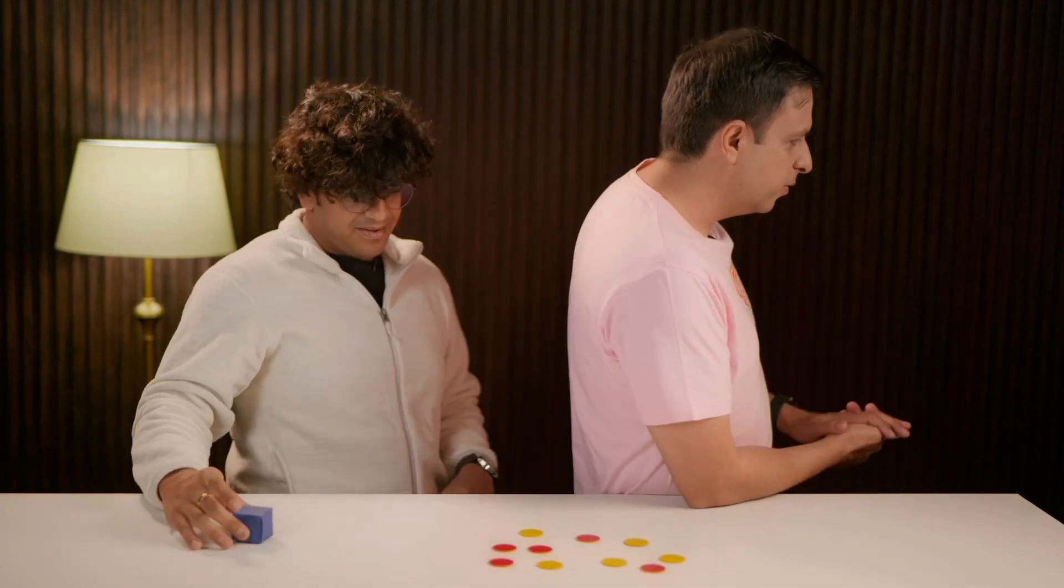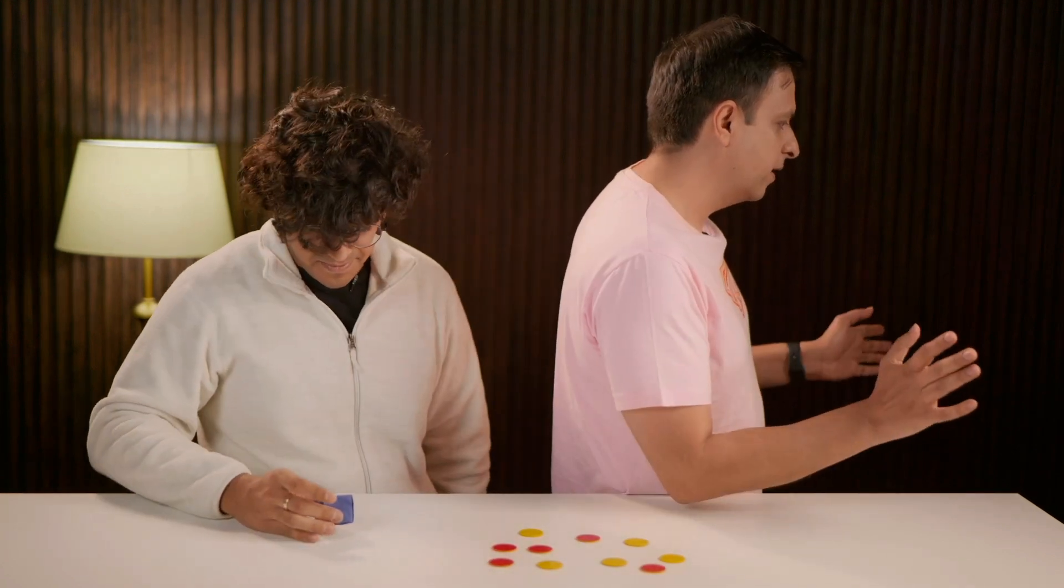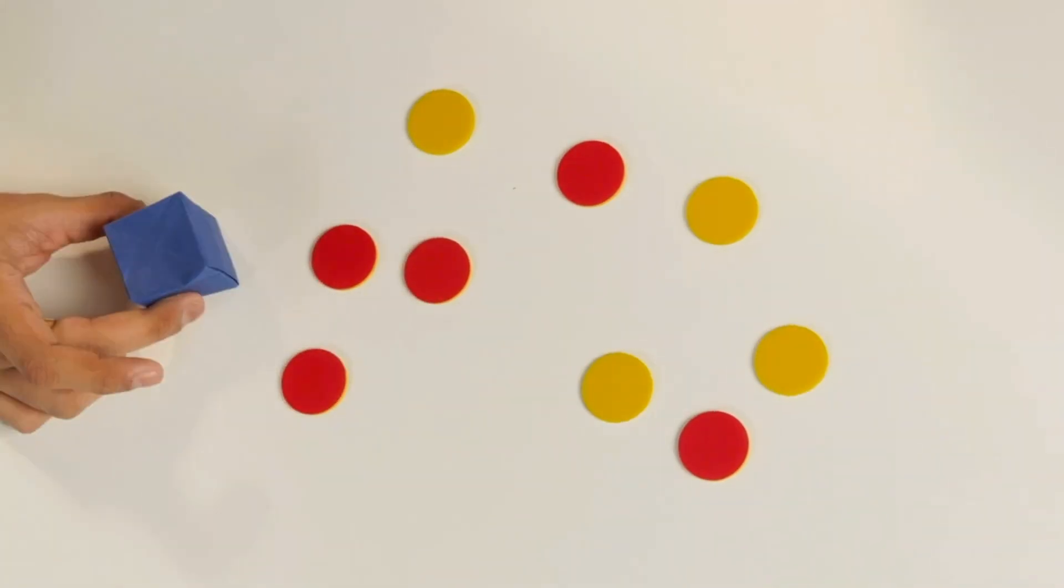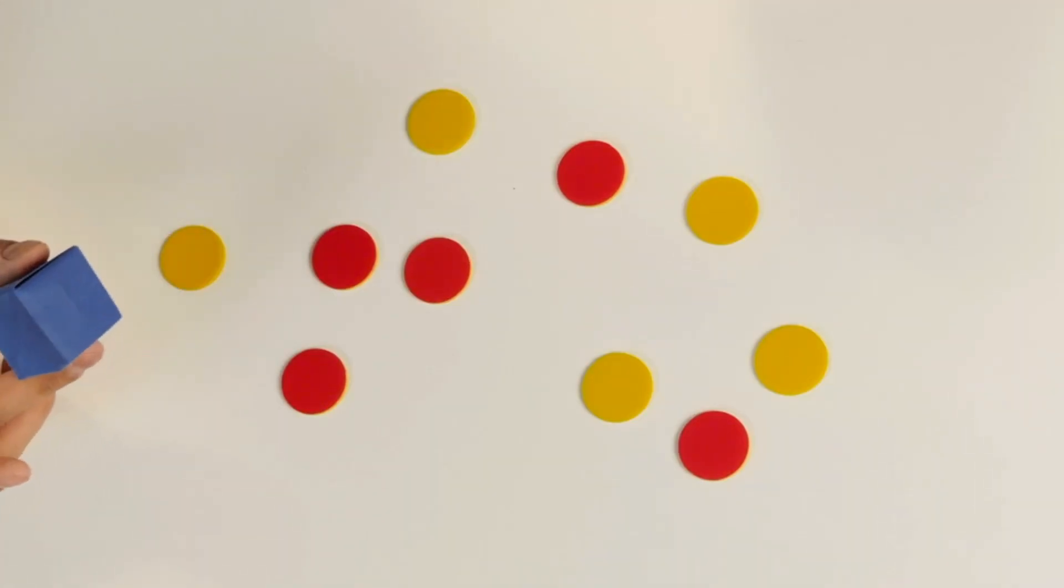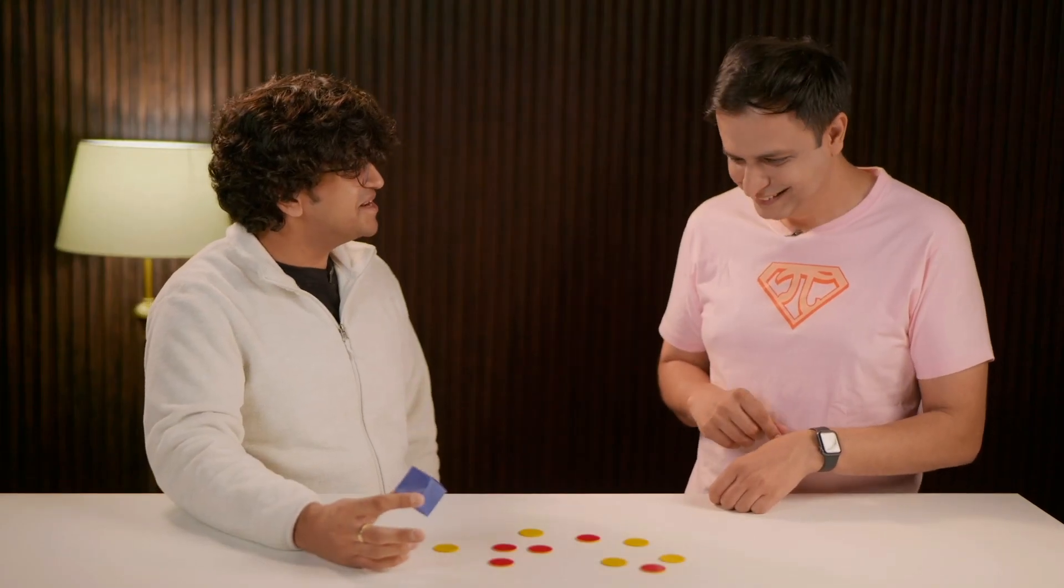Now take that blue box that you have and cover any coin randomly. Yeah. All right. Is that a yellow coin under there? Yeah. How did you know that? Magic.